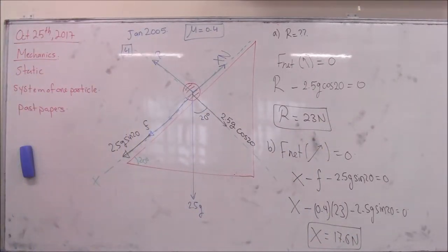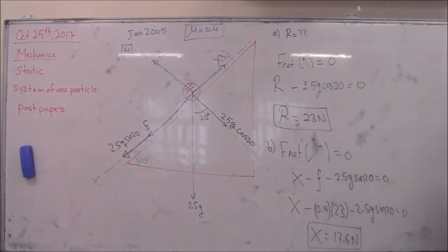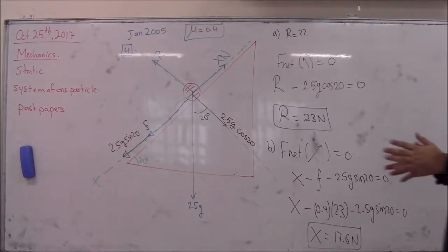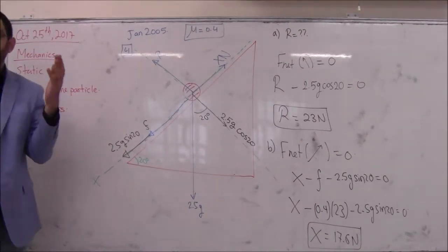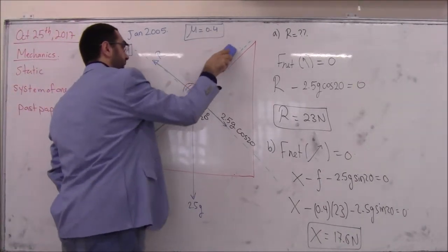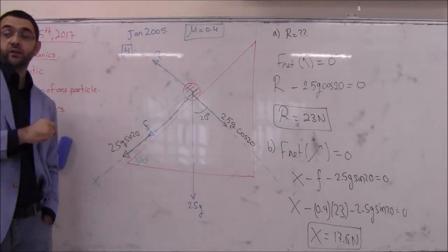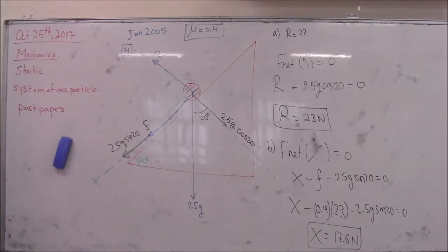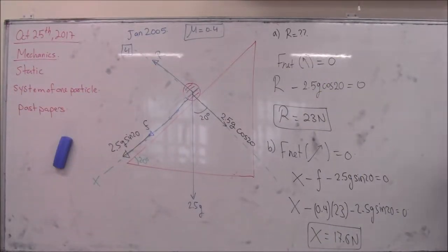Now part C: if X is removed, the possible motion for the particle is down the plane, so the friction will now act upward. The direction of friction is reversed.